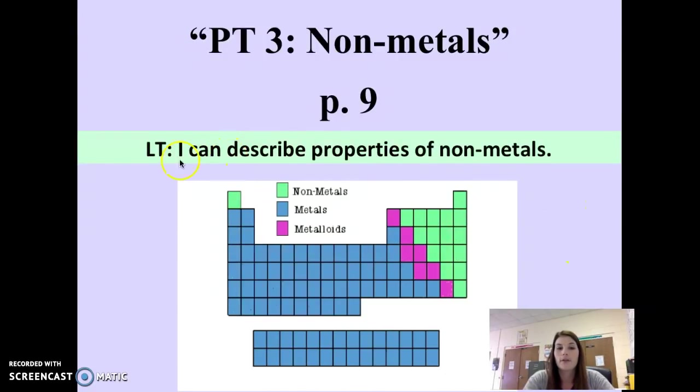Right here you see a picture of the periodic table. So far we have talked about the characteristics of metals, which are everything in blue here to the left of the staircase. Today we are going to talk about characteristics of nonmetals, which is everything in green to the right of the staircase, and the metalloids, which are on the staircase.